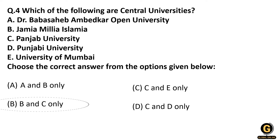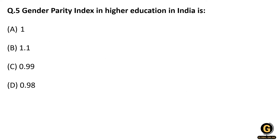The next question is about the Gender Parity Index in higher education in India. Gender parity is simply the ratio of the number of female students to the number of male students, enrolled in any education sector — primary, pre-primary, higher secondary, or higher education. Currently, in higher education, the Gender Parity Index is 1.01, which rounds to 1. Remember: the Gender Parity Index in higher education is 1.